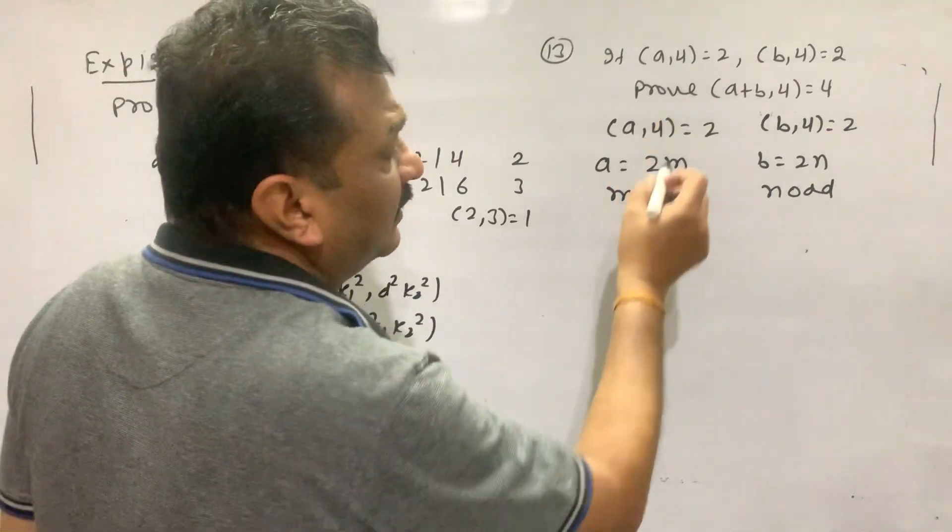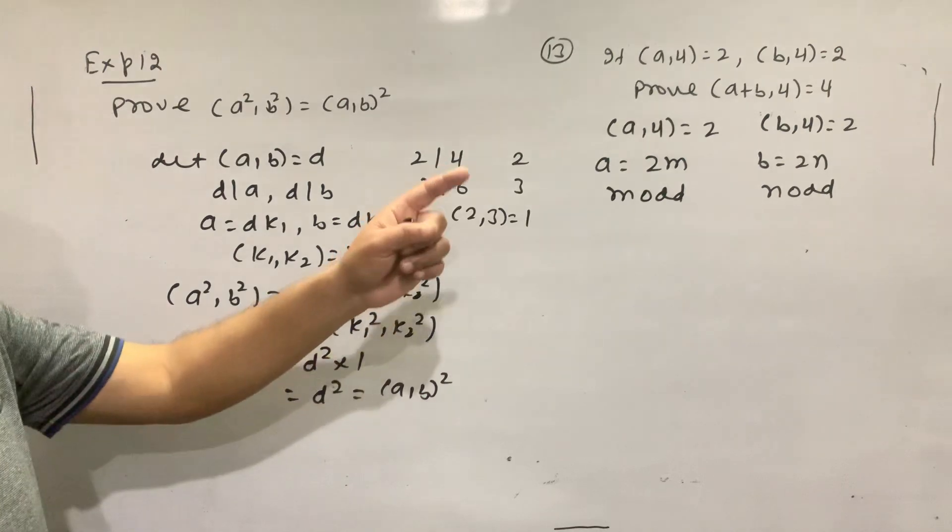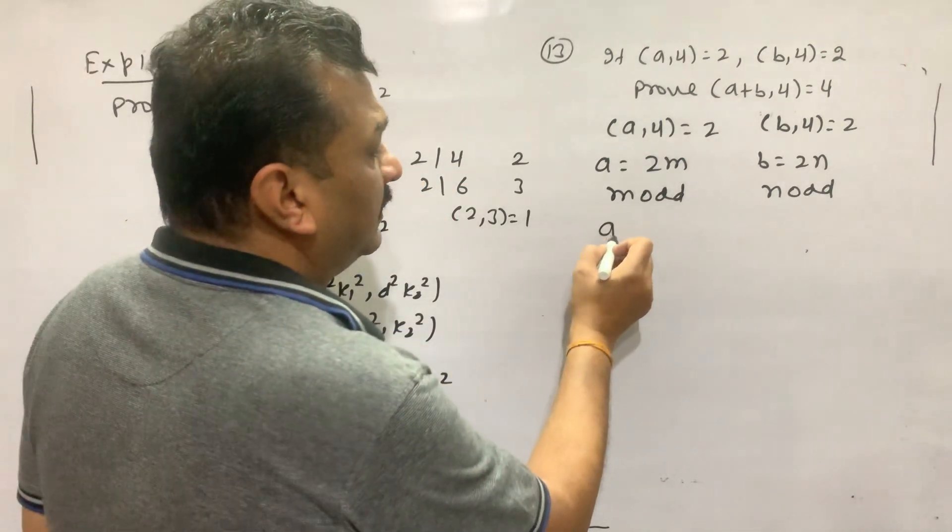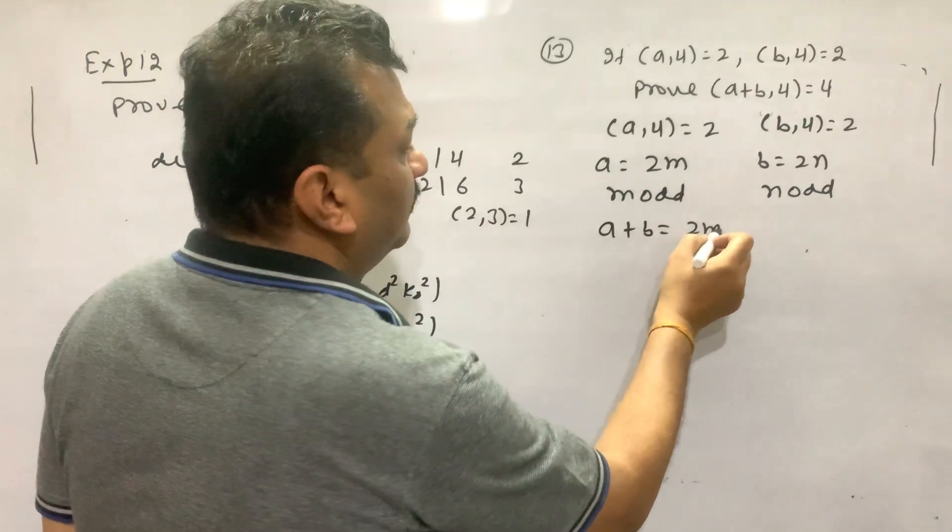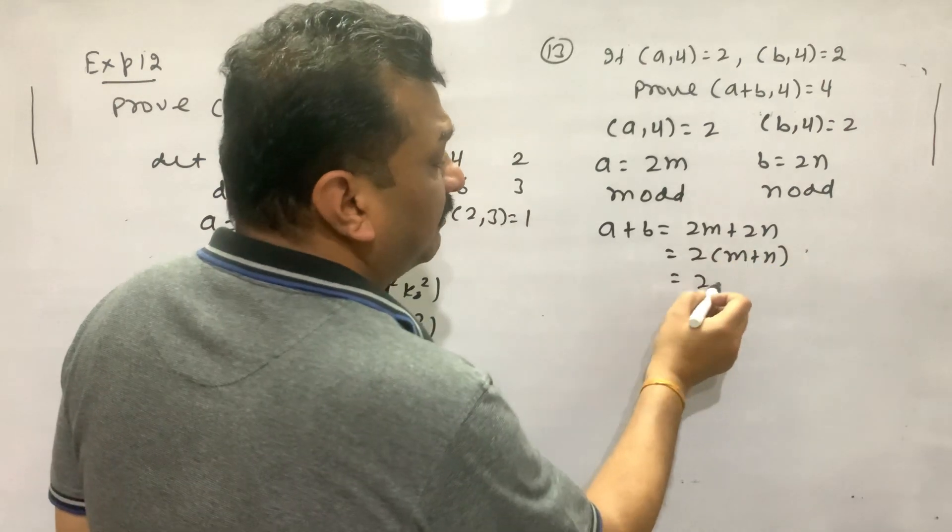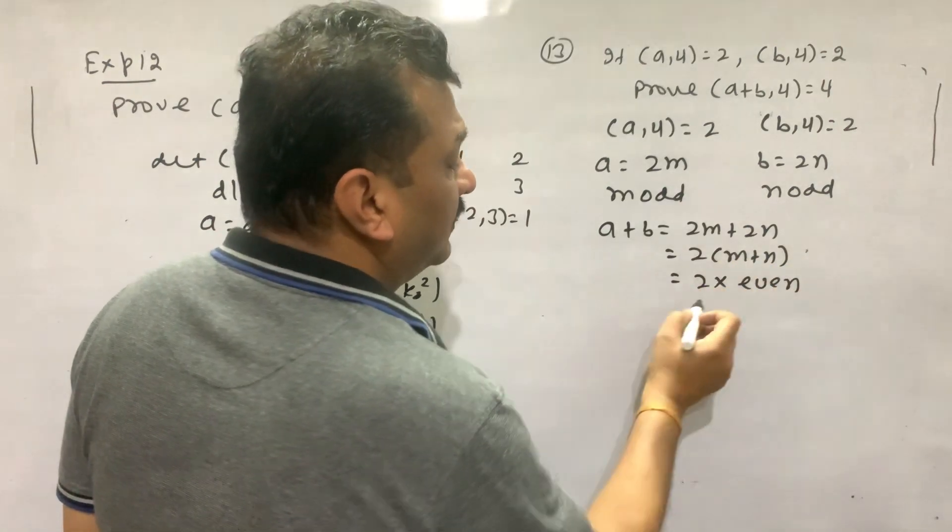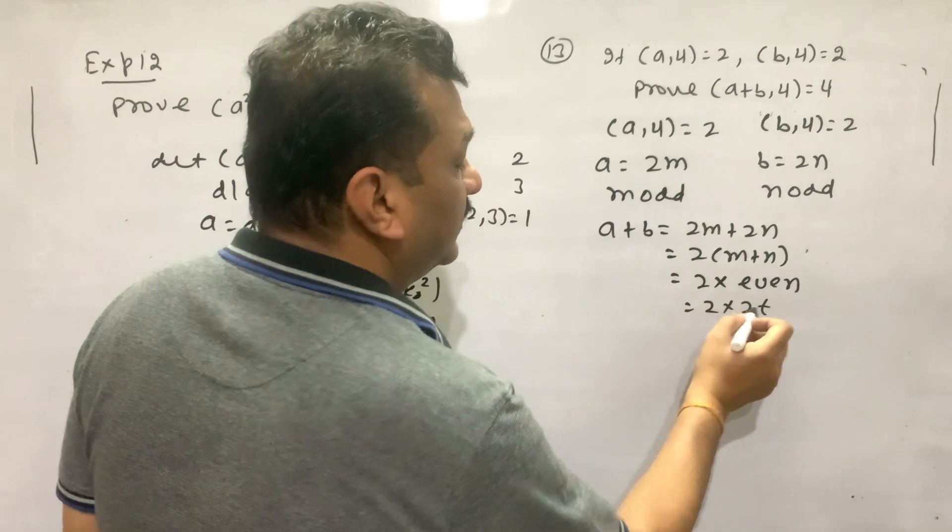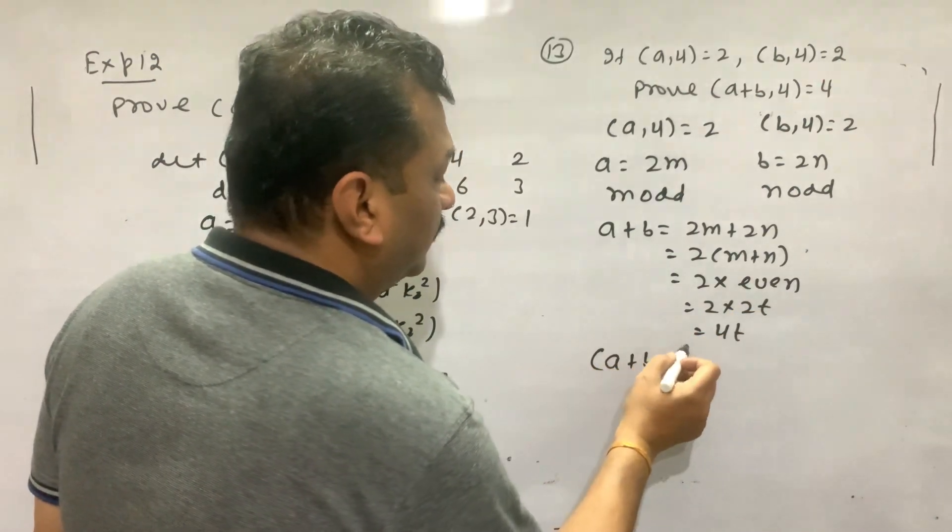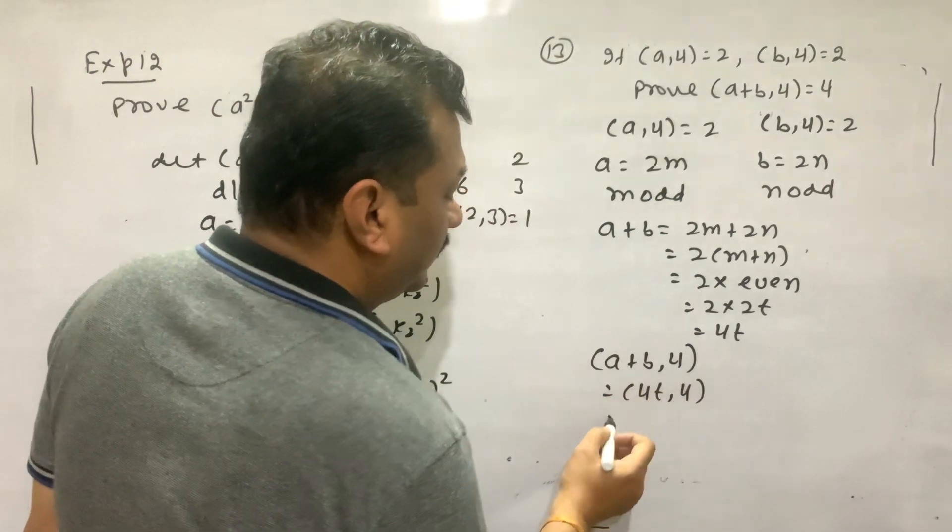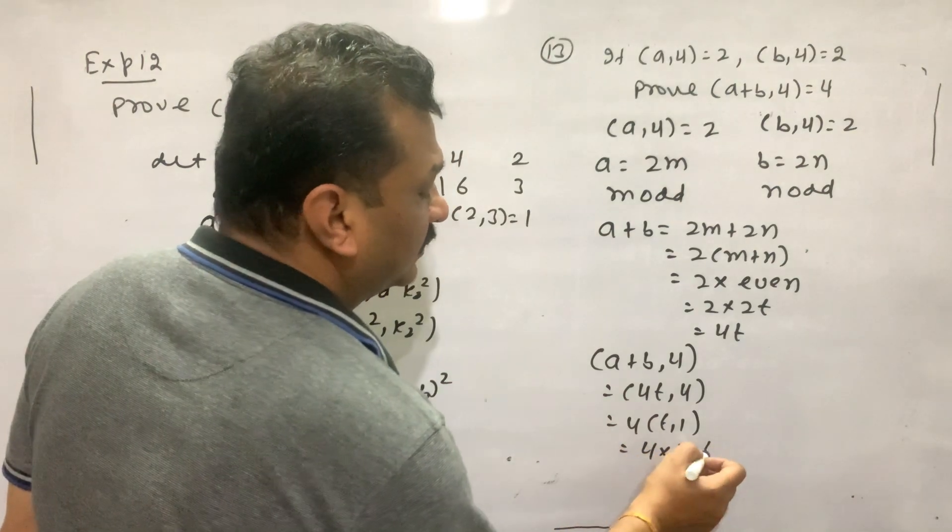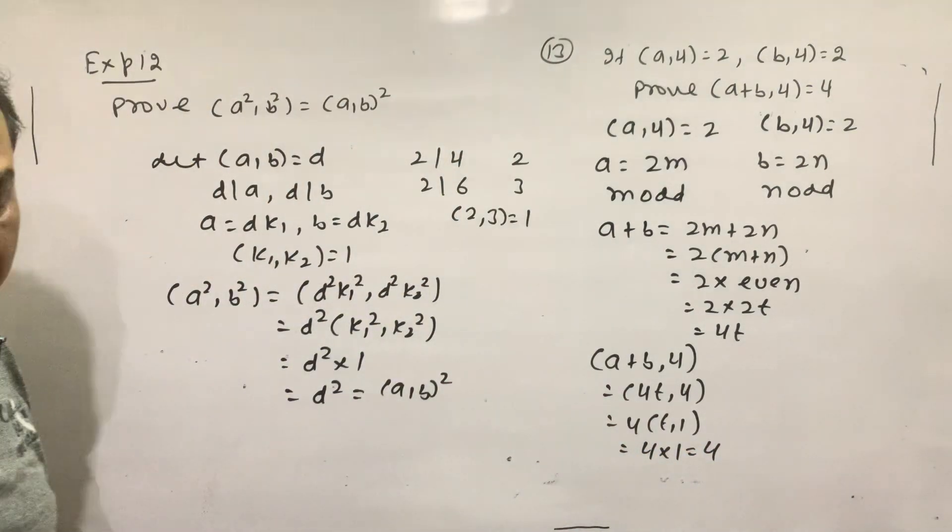How do I prove it? A plus B, the greatest common divisor of A plus B is 1. So A plus B equals 2N plus 2L, 2N plus N. N plus N is what, is even? I have 2T. So A plus B is 4T, 4 times 1. So what is the greatest common divisor? 1. So what is it? 1. Clear?